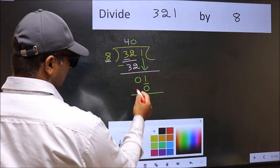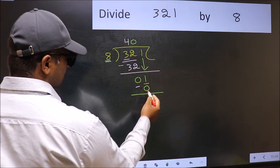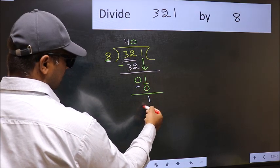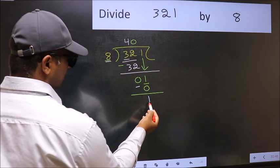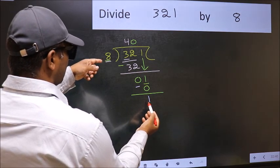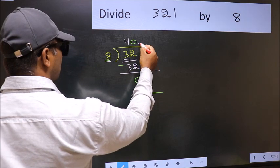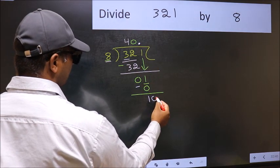Now we should subtract. 1 minus 0, 1. Over here, we did not bring any number down. And 1 is smaller than 8. So now you can put dot and take 0.